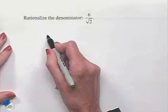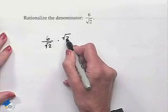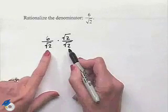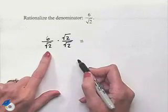The process we'll use is to take the square root of 2 over the square root of 2 in order to multiply times the given fraction. We choose this fraction, first of all, because it's equal to 1, so it'll be equivalent to what we start with.